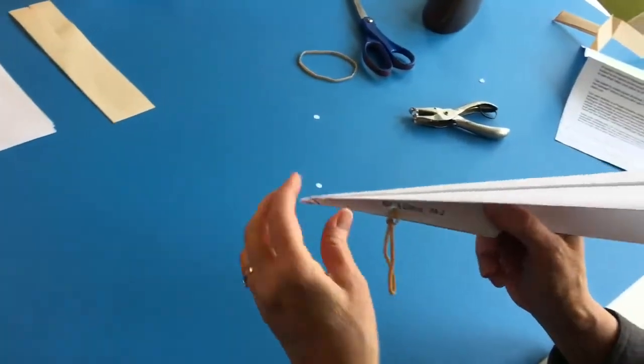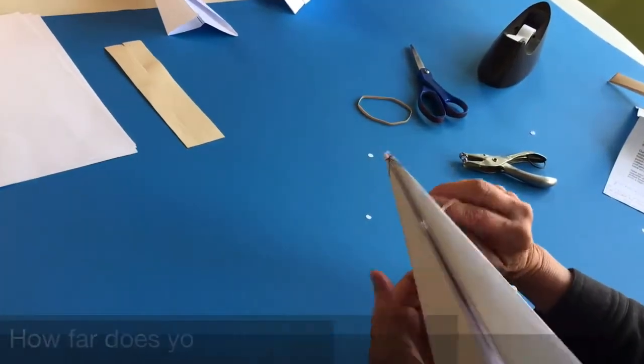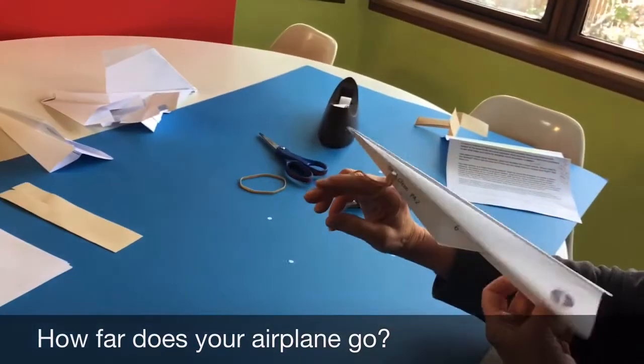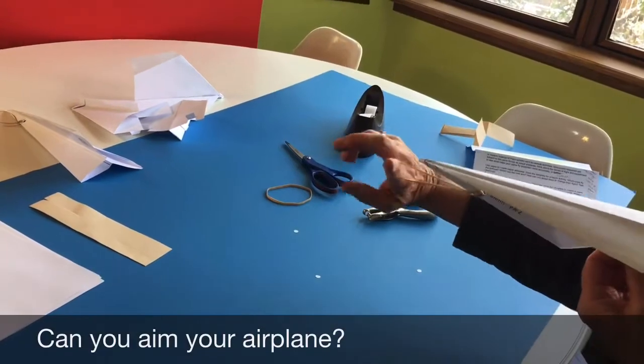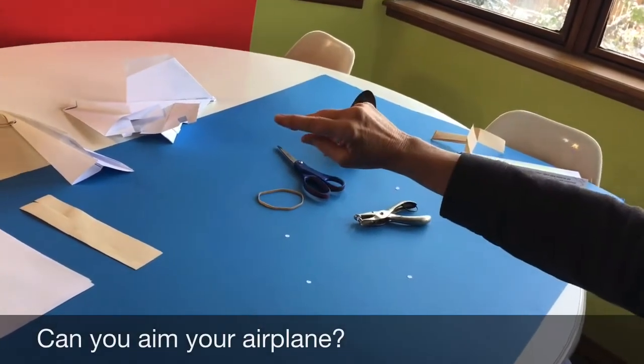Then you're going to loop the rubber band around your finger, hold on tight to the back of your airplane and let go.